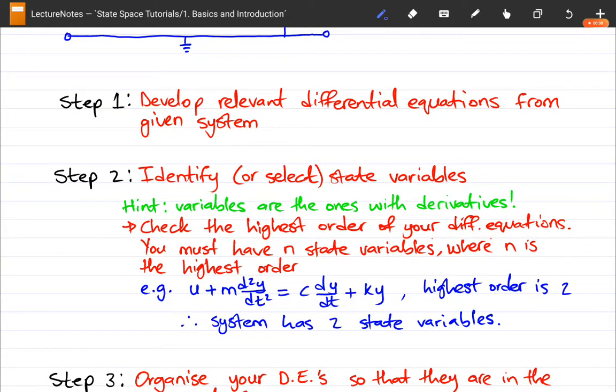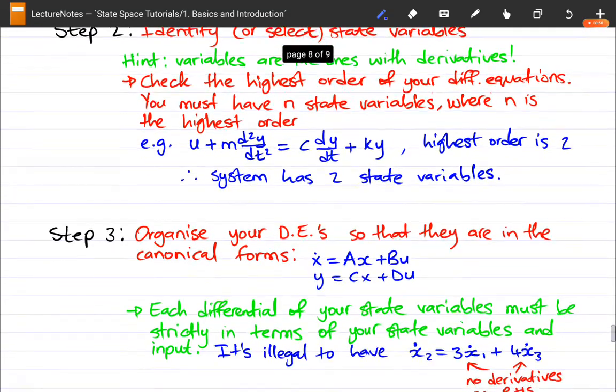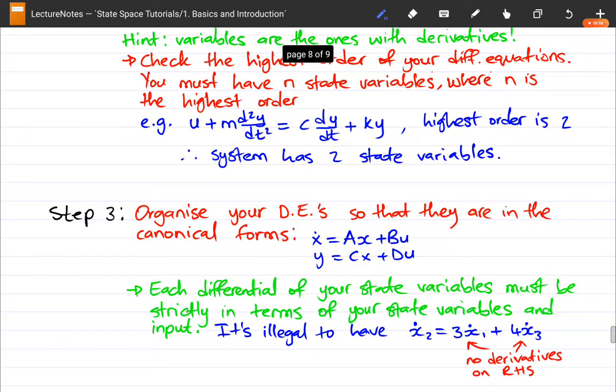So step one says you develop relevant differential equations from a given system. Step two says we identify or select your state variables and we can identify state variables as the variables that have derivatives in the time domain with respect to time. And then step three says you must organize your differential equations so that they are in the canonical form and this is the canonical form of a state space model which should be sufficient for now.